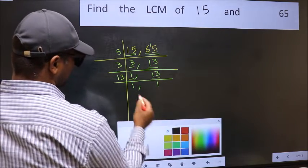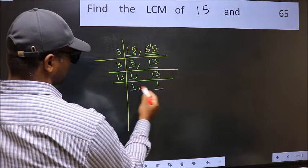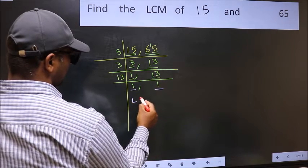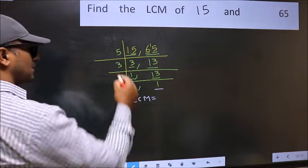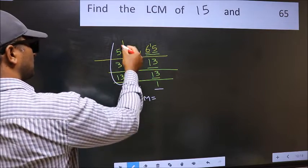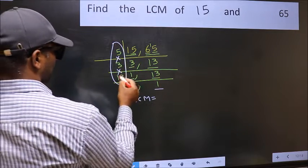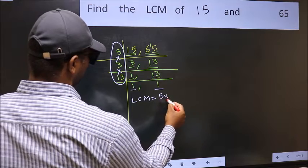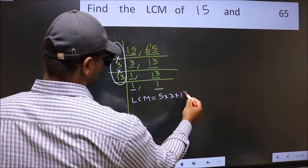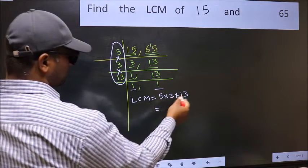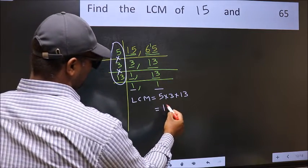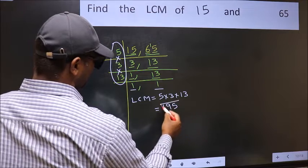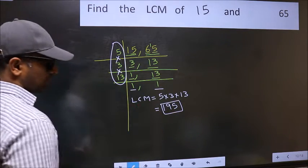So we got 1 in both the places. So our LCM is the product of these numbers. That is 5 into 3 into 13. When we multiply these numbers, we get 195 as our LCM.